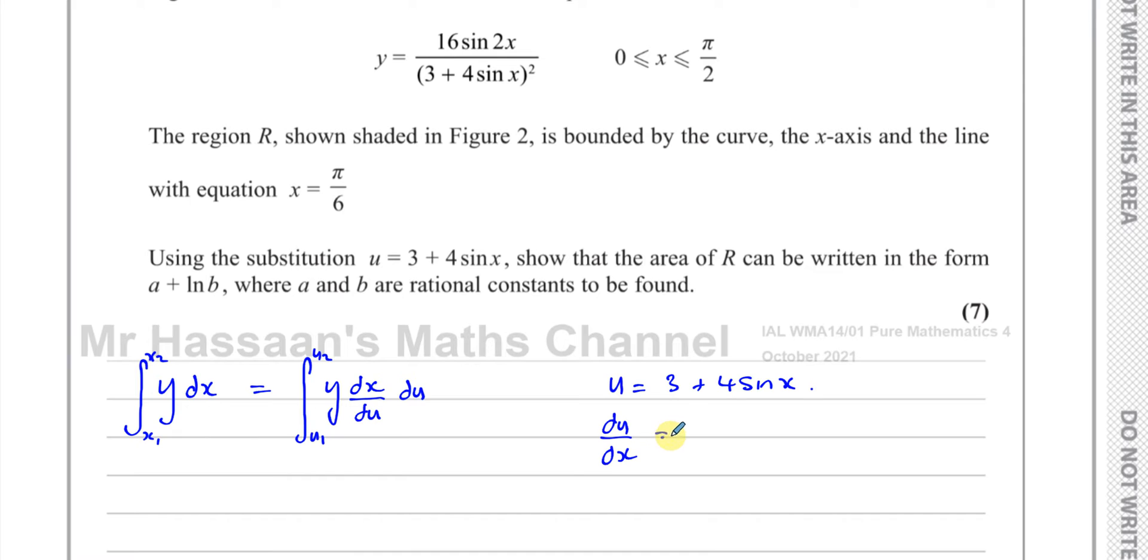We know that du/dx is going to be, well, 3 disappears, 4 times sinx gives you 4cosx. That's du/dx. So therefore, dx/du is the reciprocal of that, so it's 1 over 4cosx. I'll leave it in that form for now. That's dx/du. So I'm going to replace dx/du with 1 over 4cosx and see what happens.